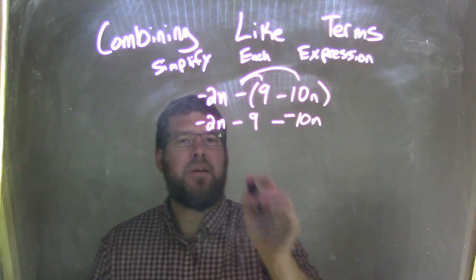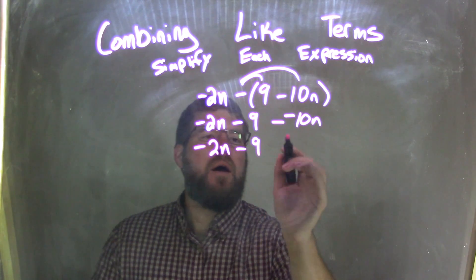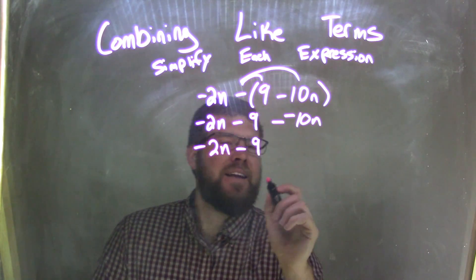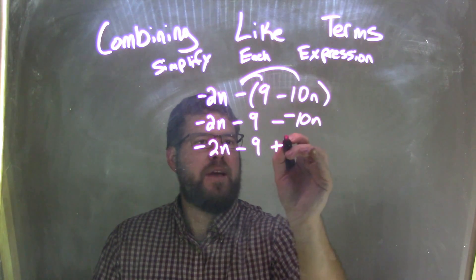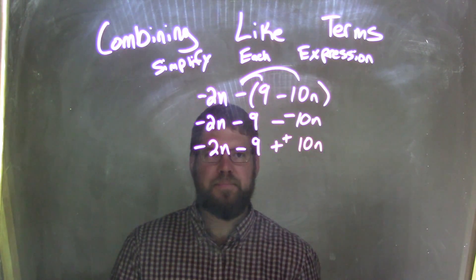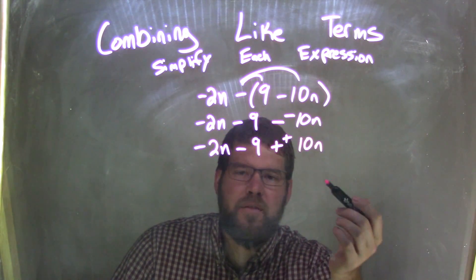So let's simplify this. We have negative 2n minus 9. Subtracting a negative is the same thing as adding a positive, so we have plus a positive 10n.